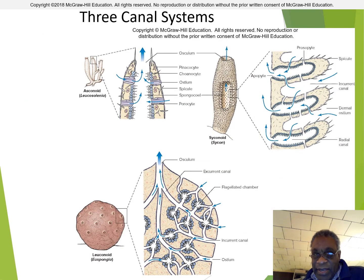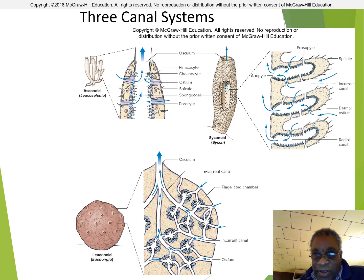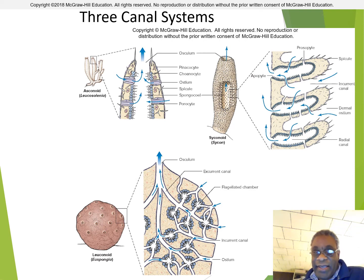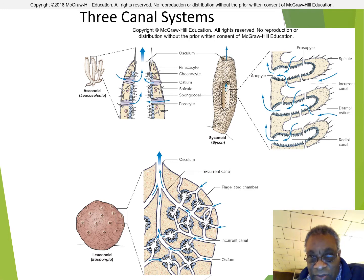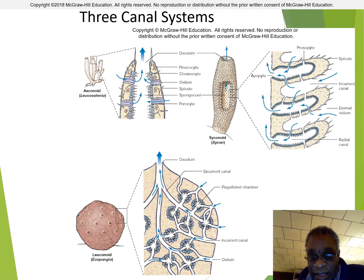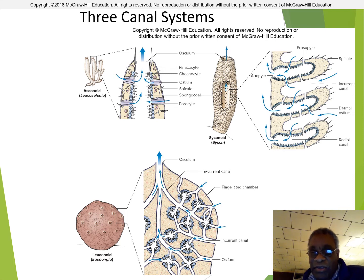Sponges have three different types of canal systems: asconoid, syconoid, and leuconoid. As you go from asconoid to syconoid to leuconoid, there is a higher degree of complexity. The asconoid just basically acts as a straight tube lined with choanocytes. Water comes in through the side of the organism, pumps up through the middle, and filters organisms out by passing past the choanocytes in a unidirectional flow.